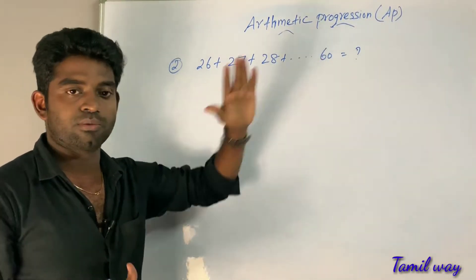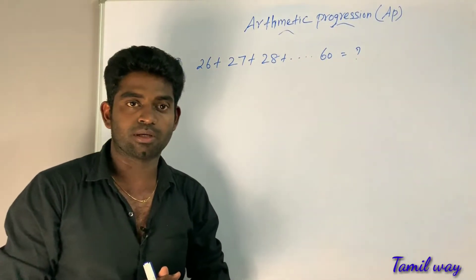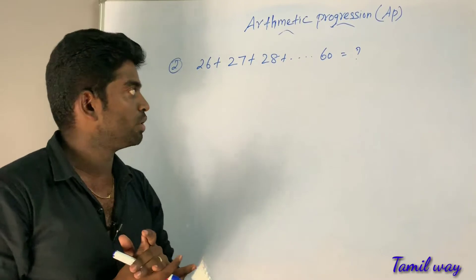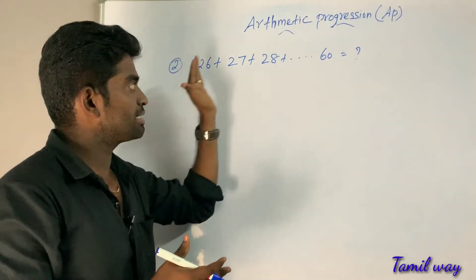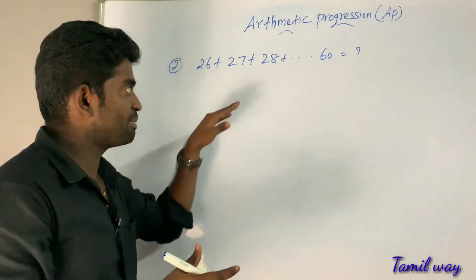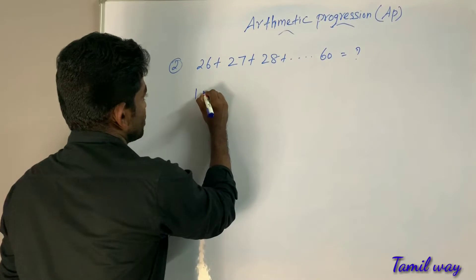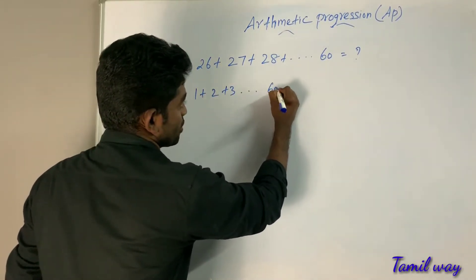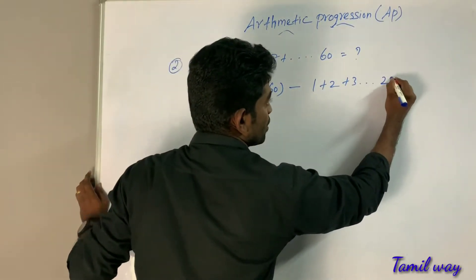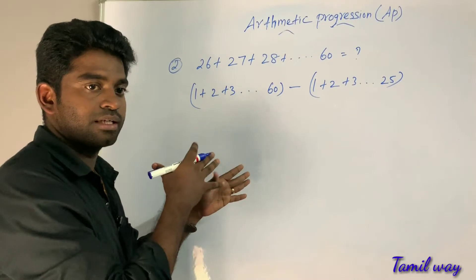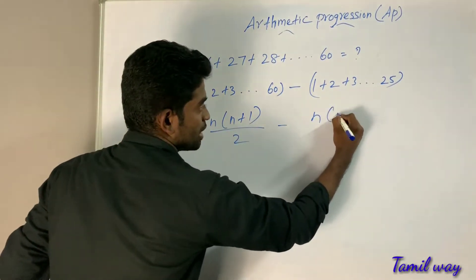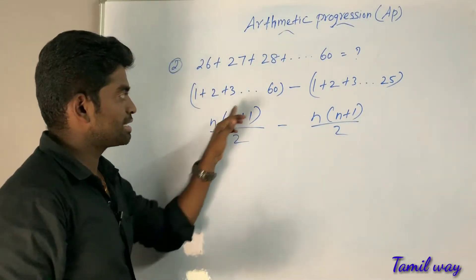Second sum: 26 + 27 + 28 + ... up to 60. Find the value. This series starts from 26, not 1. So we use subtraction: take 1 + 2 + 3 + ... up to 60, then subtract 1 + 2 + 3 + ... up to 25. The formula is N(N+1)/2 minus N(N+1)/2, where this N is 60 and the other N is 25.